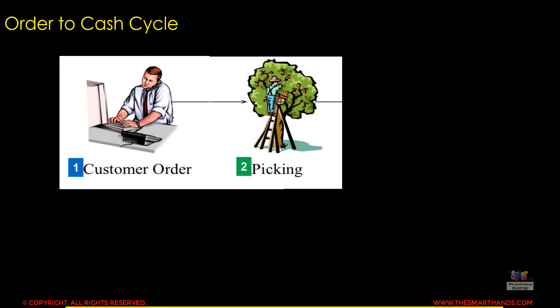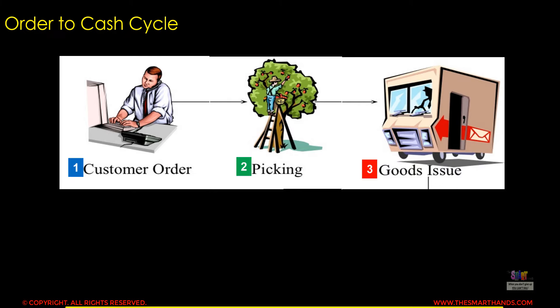The first step is that the company receives the order from the customer and the order details are entered into the system. The second step is fulfilling the order — the picking process starts, which involves either manufacturing within the company or procuring from outside. Once picking is complete, the goods are ready for the shipping process and will be goods-issued to the customer.